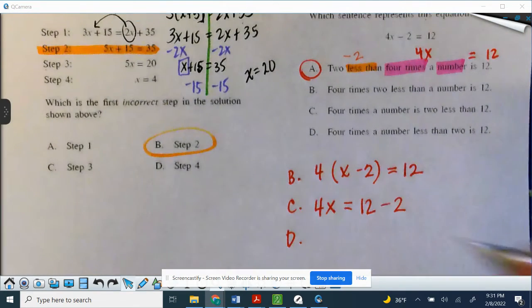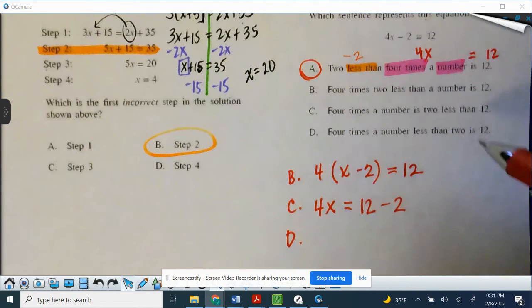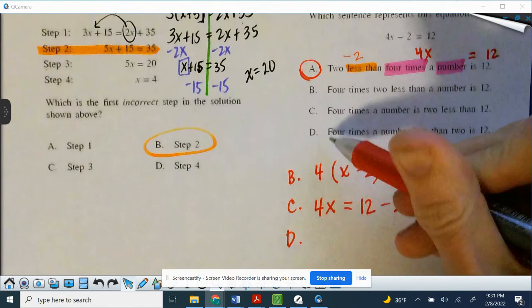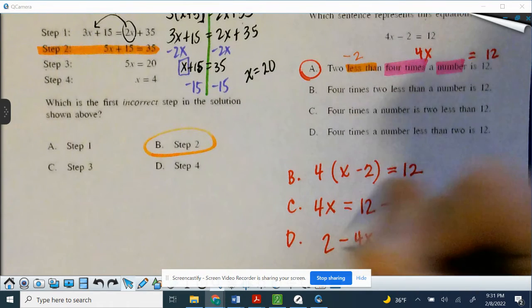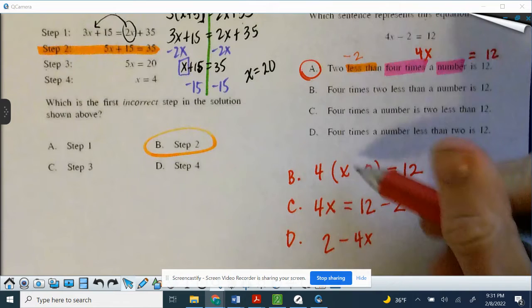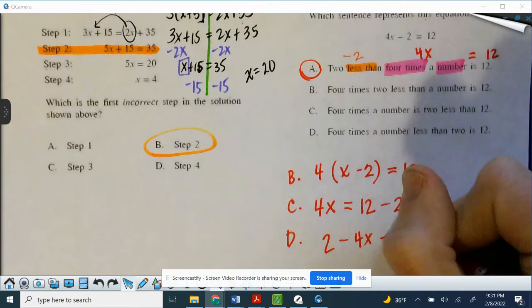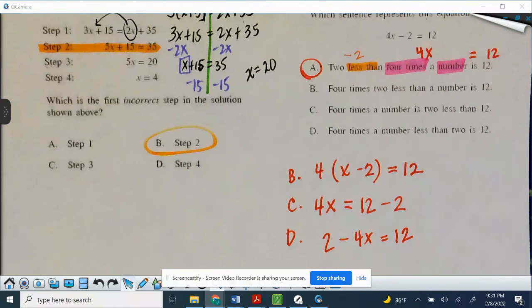So D, 4 times a number less than 2 is 12, so 4 times a number, then after it says less than 2, because remember that whatever comes in front of less than goes behind the other number, is 12. And so that's our D. Again, just practicing writing those expressions and equations from words.